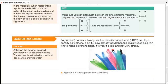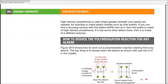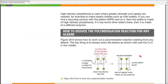Polyethene comes in two types: low-density polyethene (LDPE) and high-density polyethene (HDPE). Low-density polyethene is mainly used as a thin film to make polyethene bags — the shopping bags we commonly use at markets. It is very flexible and not very strong. Although the polymer is called polyethene, it is actually an alkane. The polymer is saturated and will not decolorize bromine water anymore, because bromine water can only be decolorized by unsaturated molecules.